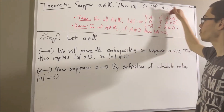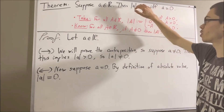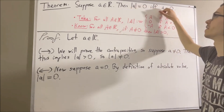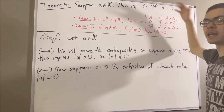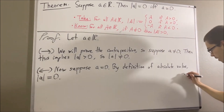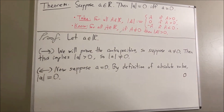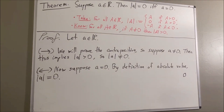We've proven both directions, which means we have proven the statement that the absolute value of a equals zero if and only if a equals zero. That's exactly what we wanted to prove, so this completes the proof. That's pretty much it for this video.